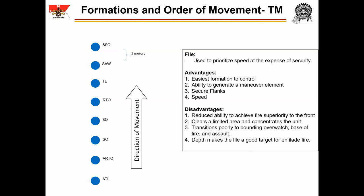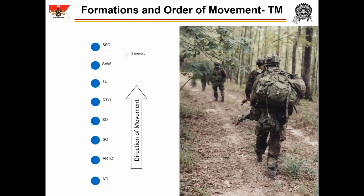The file has some disadvantages. First, it has reduced ability to achieve fire superiority to the front — in order to generate significant firepower to the 12 o'clock, the team has to conduct a deliberate react to contact. Second, the file clears a limited area and concentrates the unit, meaning it is unsuitable for reconnoitering large areas while moving. Third, the file transitions poorly to bounding overwatch, or base of fire and assault elements. Bounding overwatch requires two separate elements, each overwatching the other's movements; the file maintains a single element and is thus unsuitable. Finally, the file's depth means that a single machine gun can easily achieve enfiladed fire of the entire element. Enfiladed fire occurs when the long axis of the machine gun's beaten zone coincides, or nearly coincides, with the long axis of the target.